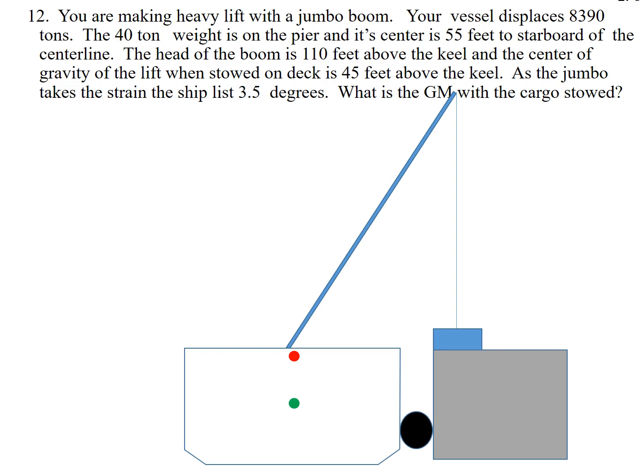Well, it turns out we're going to have to do this problem in a couple of steps. First, we're going to use the formula that we got from the inclining experiment, and we're going to use that to calculate the GM of the vessel when we lift the weight, and then we're going to use GG to calculate what the GM is going to be after we shift it. So let's just look at it one step at a time.